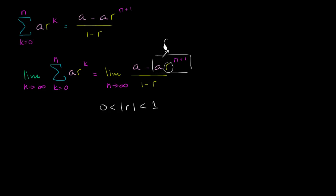So this goes to 0 if the absolute value of r is less than 1. So this, we could argue, would be equal to a over 1 minus r.